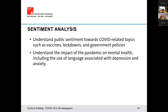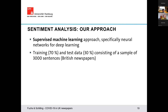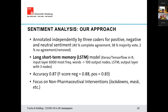We're using sentiment analysis to understand public sentiment towards COVID-related topics such as vaccines, lockdowns, and government policies, and to understand the impact of the pandemic on mental health, including language associated with depression and anxiety. We use a supervised machine learning approach — specifically neural networks for deep learning. We have a sample of 3,000 sentences from British newspapers manually annotated by three coders, split into training and test sets, using long short-term memory models to generalise from these annotations. Here we focus on non-pharmaceutical interventions such as lockdown and mask.